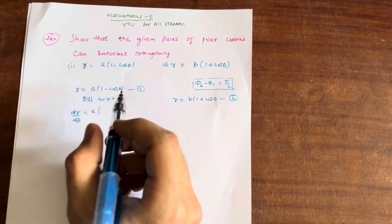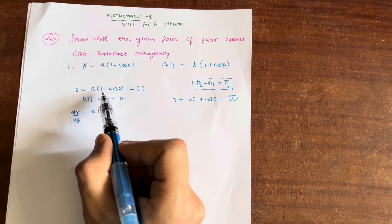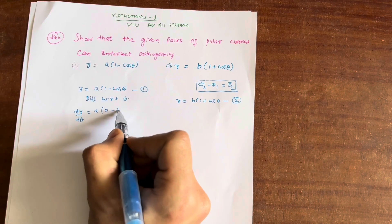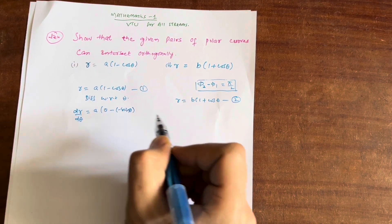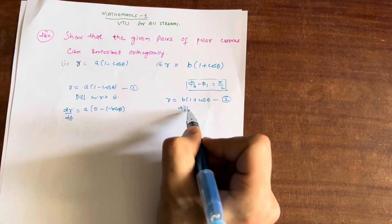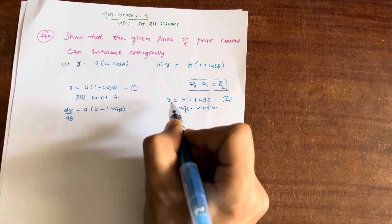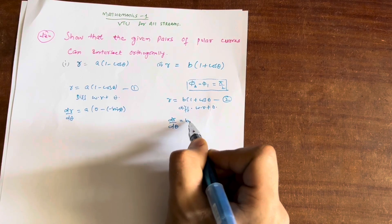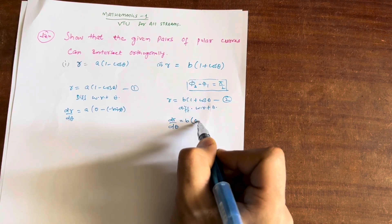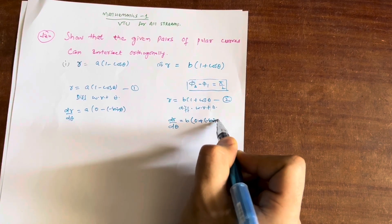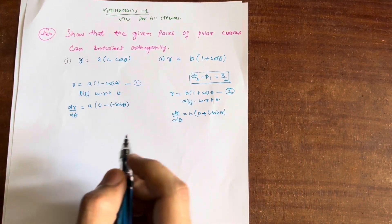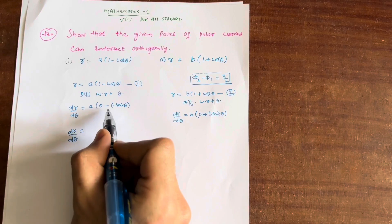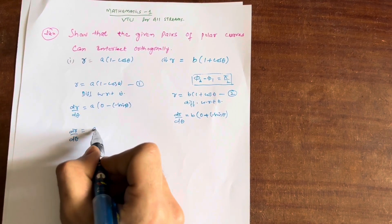The differentiation of 1 — you should know this — differentiation of a constant is always equal to 0. So differentiation of 1 is 0, and minus the differentiation of cos is minus sin. So we are getting dr/dθ equals A into (0 minus (−sin θ)), which simplifies to A sin θ.